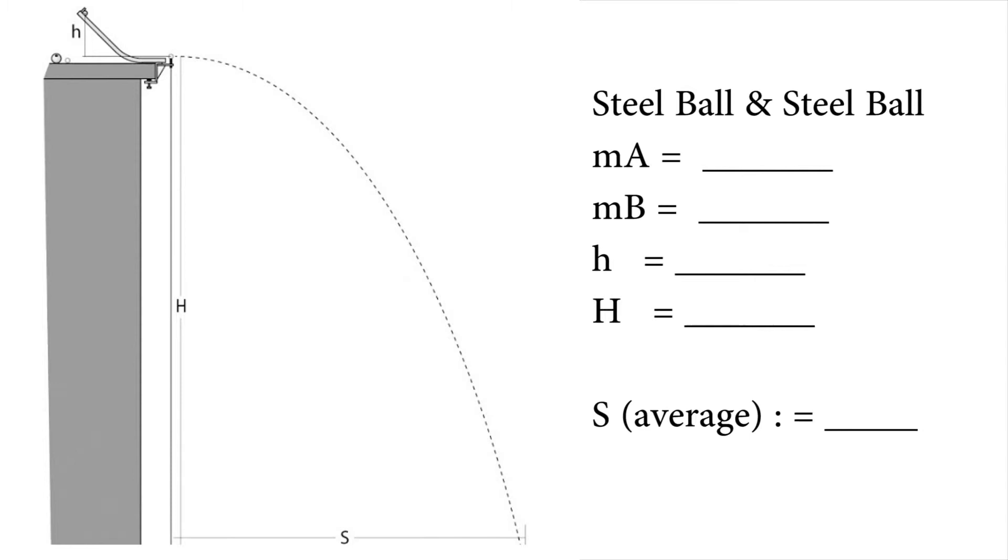Regardless of which combination of marbles you use, there are some common values you need to measure: the mass of each ball, the vertical distance that the marble is falling through the ramp (little h),